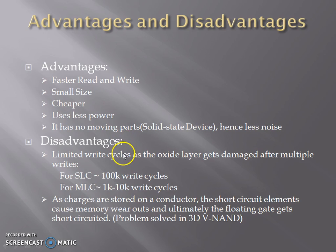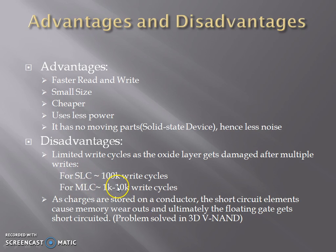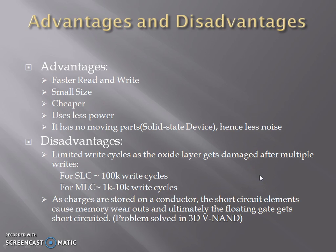Disadvantages are: it has limited write cycles. This happens because electrons have high energy and they collide with the oxide, damaging it after multiple writes. Therefore, for a single-level cell, the maximum write cycles are 100k. For a multi-level cell, the maximum write cycles are 1k to 10k. The other disadvantage is that the charges are stored on a conductor, hence short-circuit elements cause memory wearout and ultimately the floating gate transistors short-circuit.